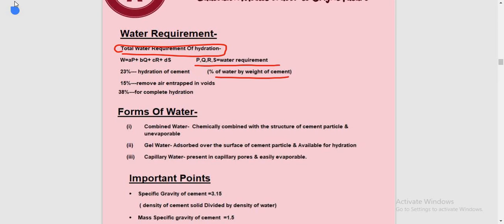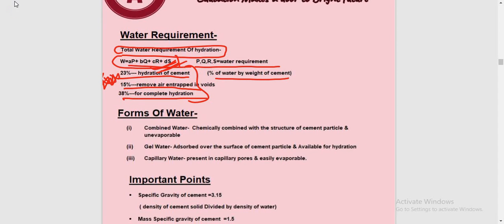Similar to how total heat of hydration was calculated, water requirement can also be derived using PQRS for water requirement percentage and ABCD for compound percentages. The percentage of water by weight of cement: mainly 23% is required for hydration, 15% is trapped in air voids, and 38% is required for complete hydration. This is a frequently asked question in SSC JE and AE exams — 38% for complete hydration and 23% for hydration of cement.